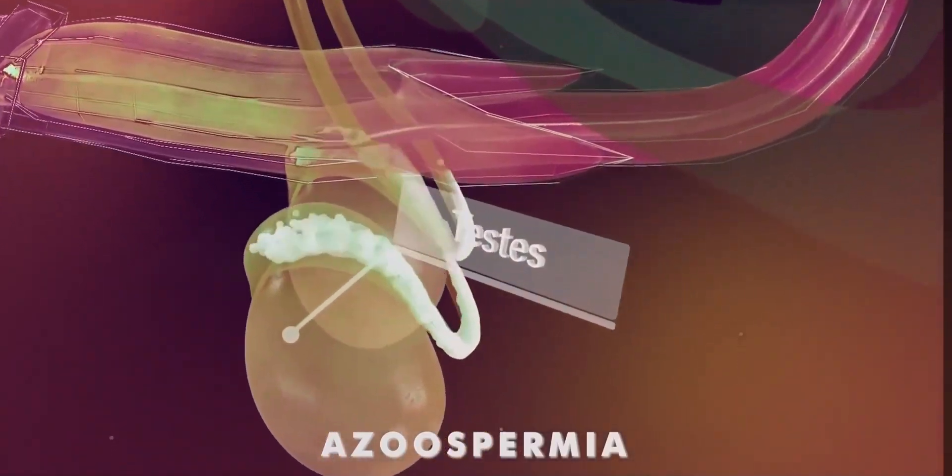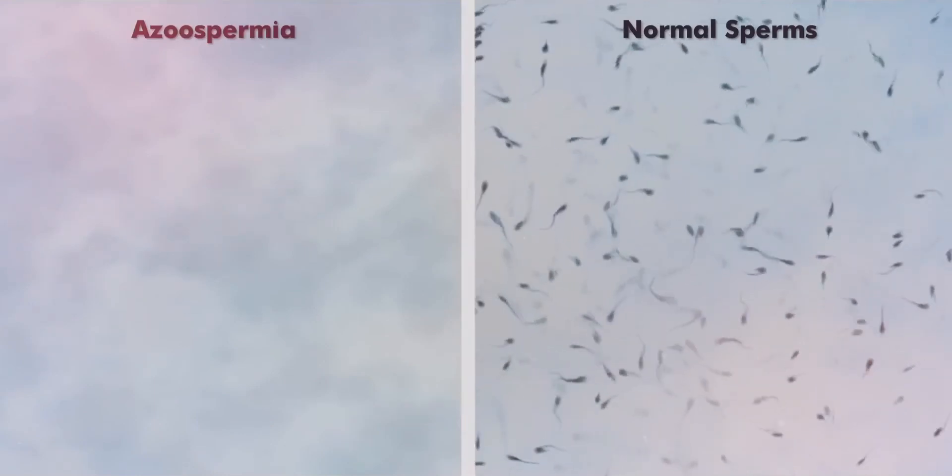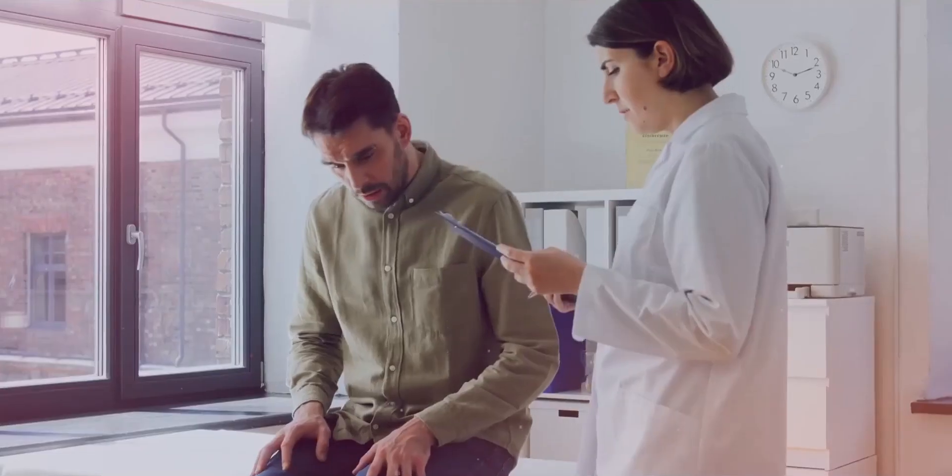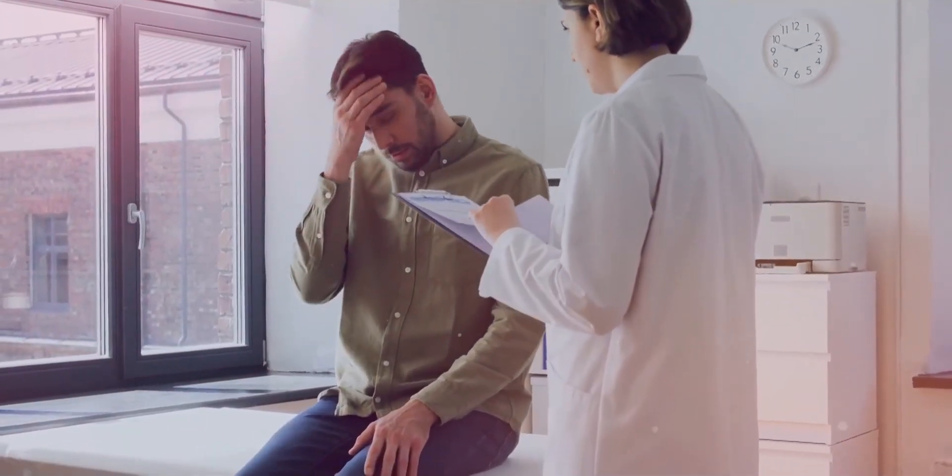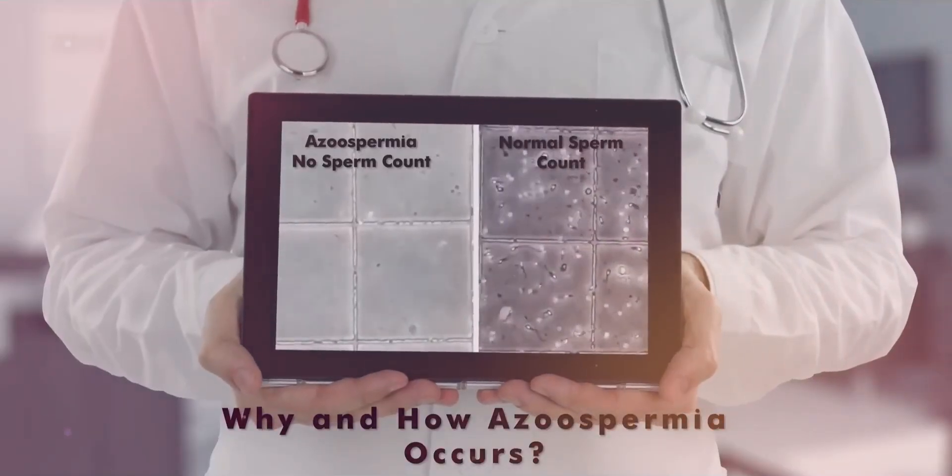Azuspermia is a medical condition in which sperms are totally absent in the male's semen. Males with such conditions are usually infertile, but in some cases, azuspermia patients can regain fertility. The condition of azuspermia can affect 1 out of 100 males. So let's see why and how is the condition of azuspermia.